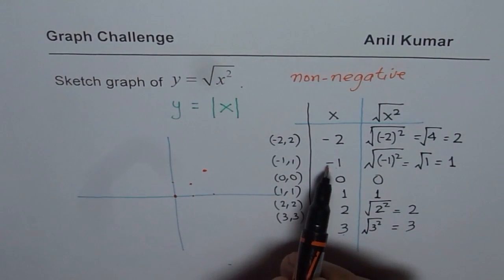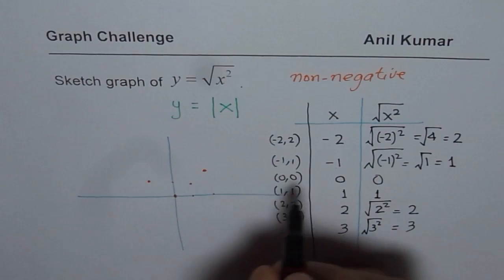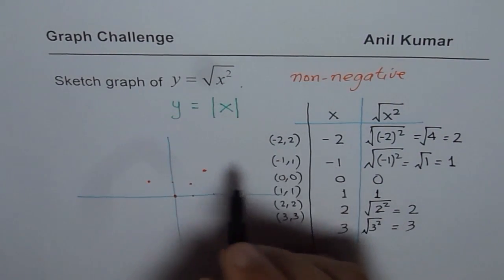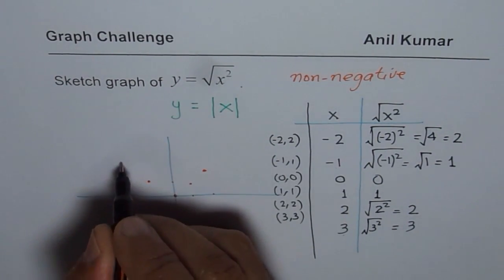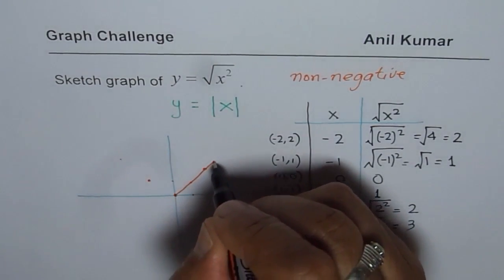Similarly, if I go on the negative 1 side. So negative 1, 1, right? So we get that point. Negative 2, 2. So negative 2, 2. So we get a point here. Joining these points, what do you get?